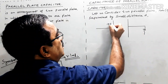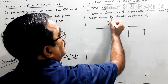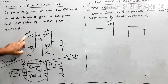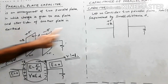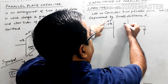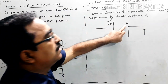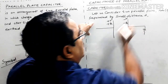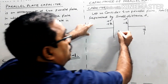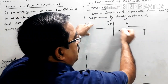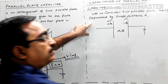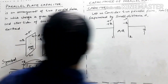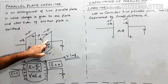When we give +Q charge to plate one, its surface charge density is +σ. By induction, −Q charge is induced on plate two with surface charge density −σ. The medium between the two parallel plates is air. This is plate 1 and this is plate 2.